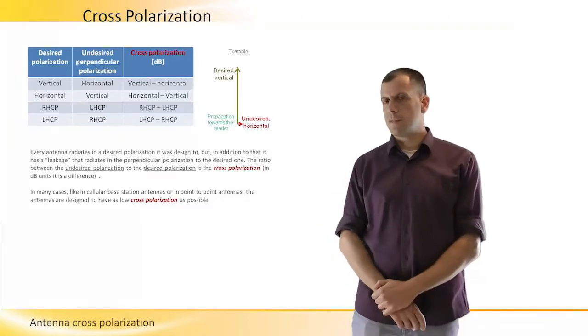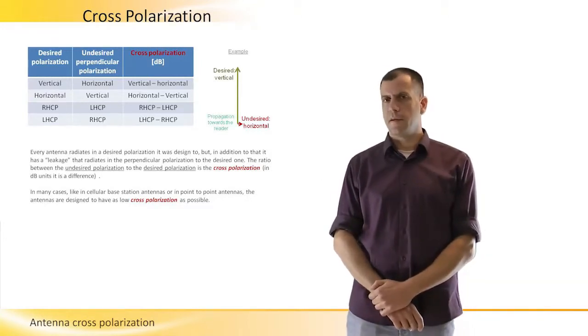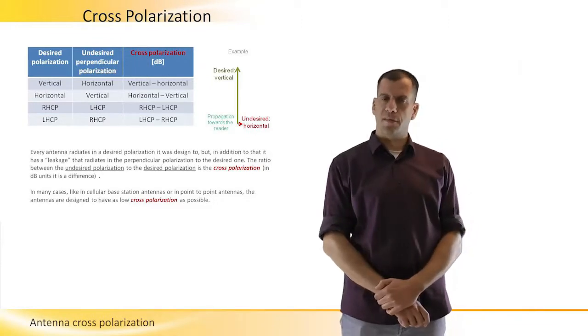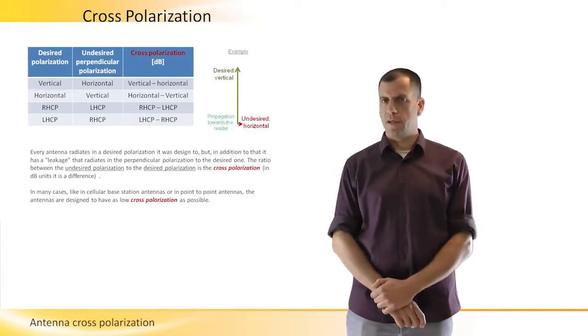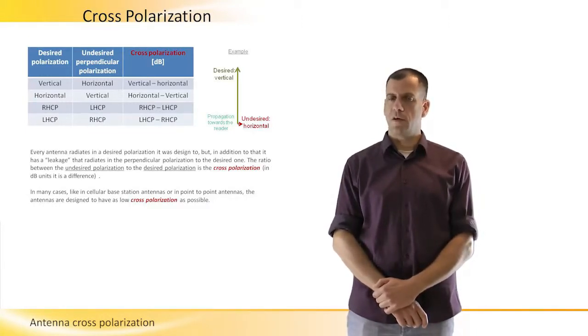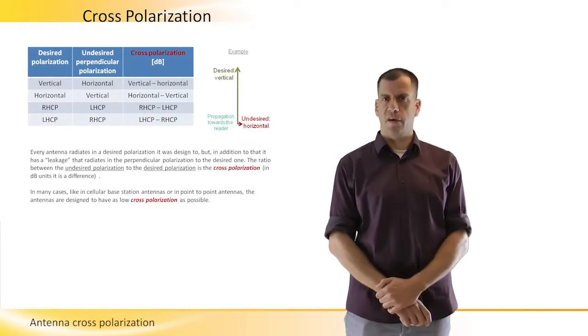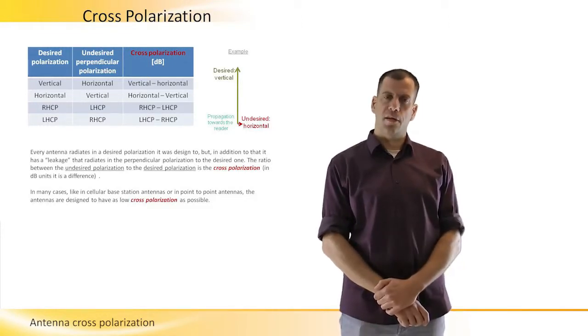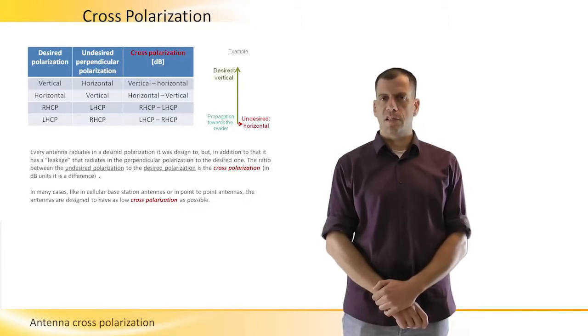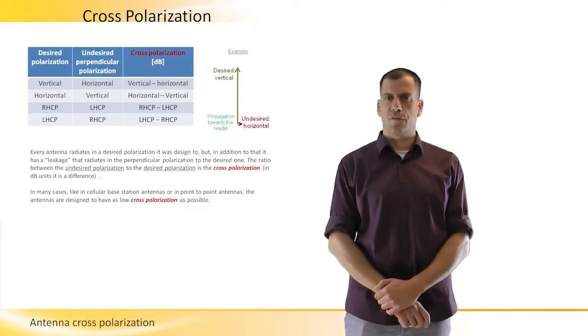If we transmit one in vertical polarization and we keep the cross-polarization very low and then the other radio would transfer the energy in horizontal polarization and also keep a cross-polarization very low, then the radios won't interfere each other.